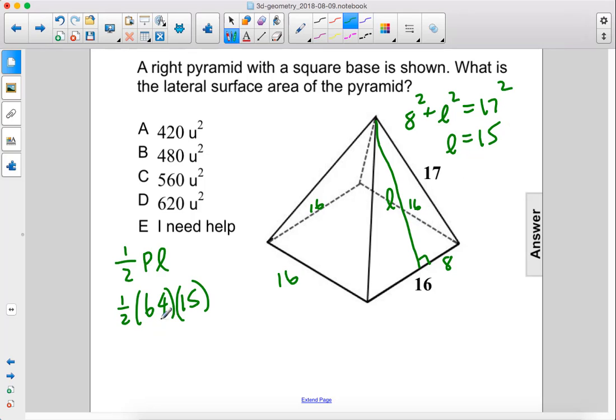So 1 half 64 is 32 times 15 is 480. The answer is B.